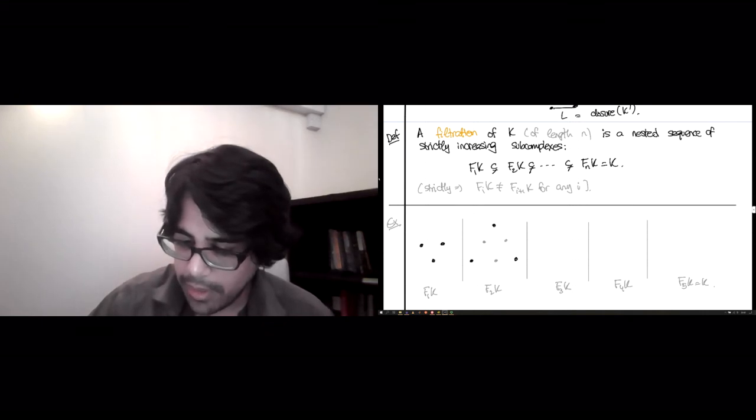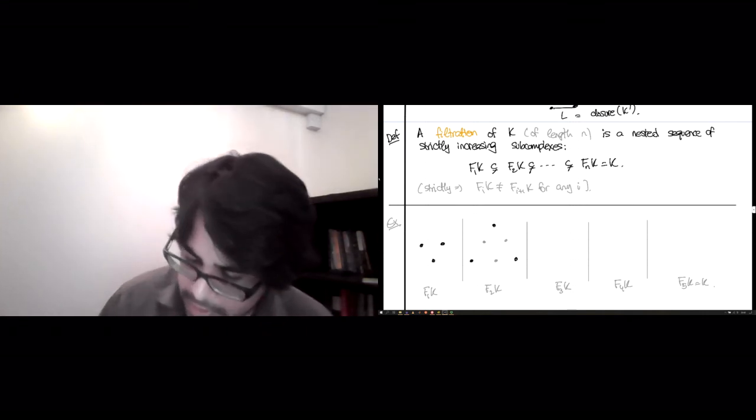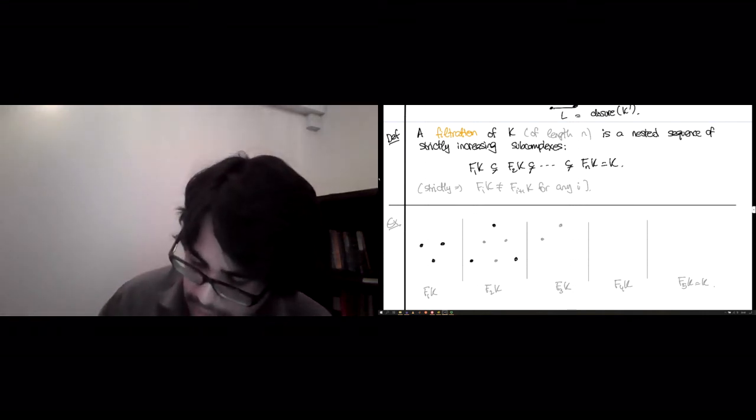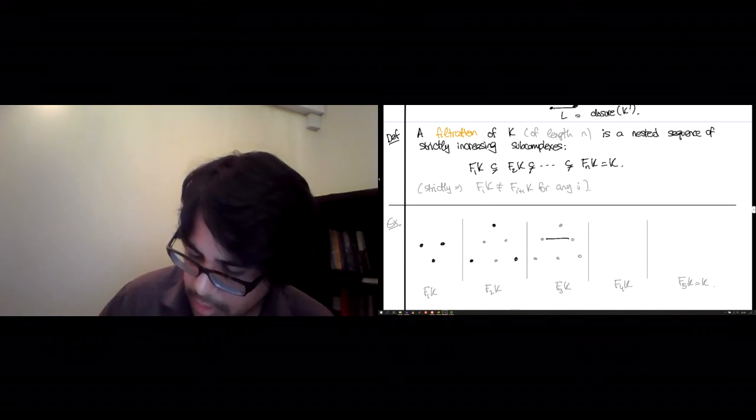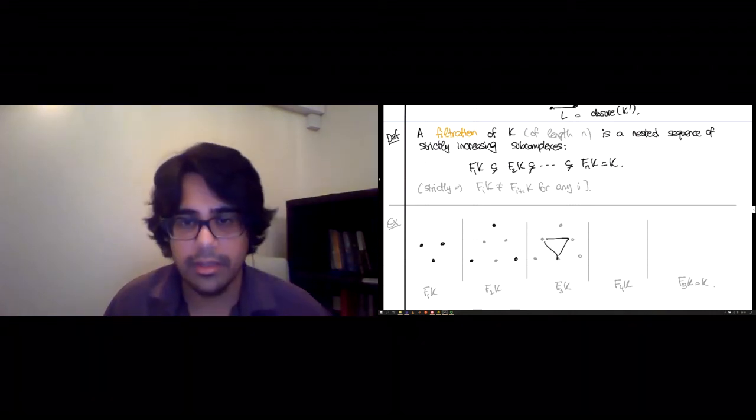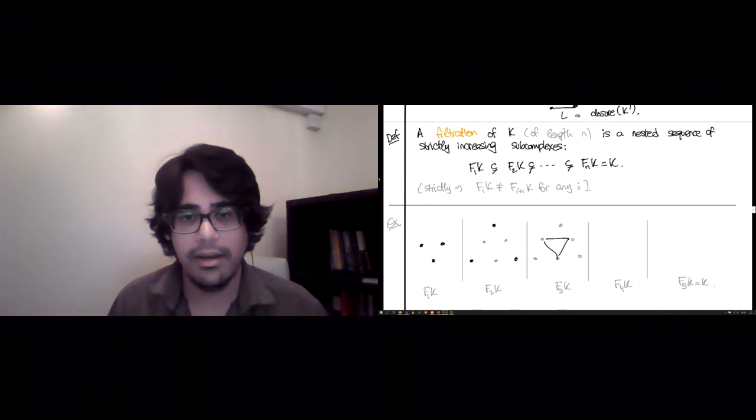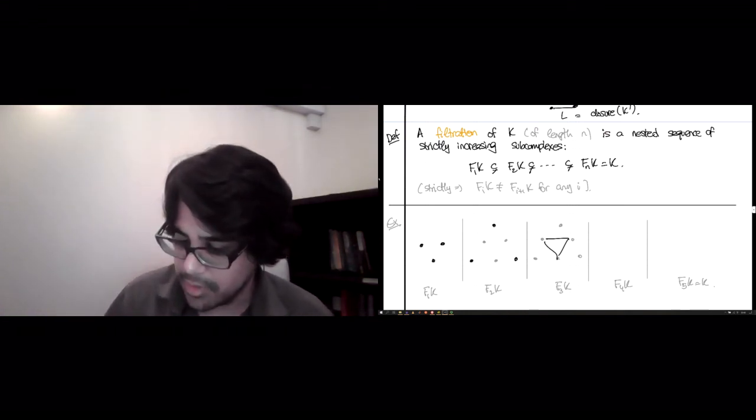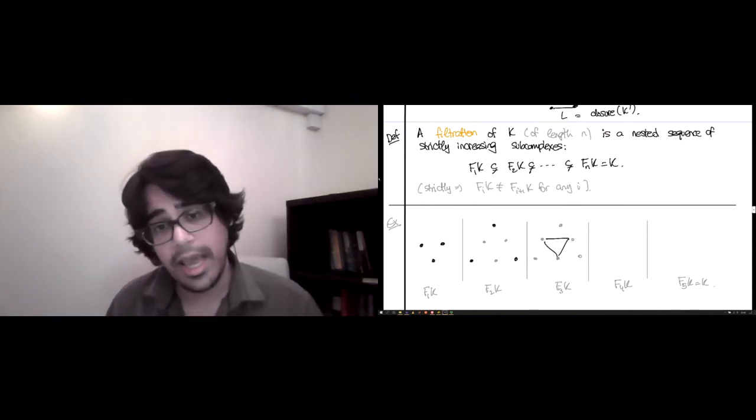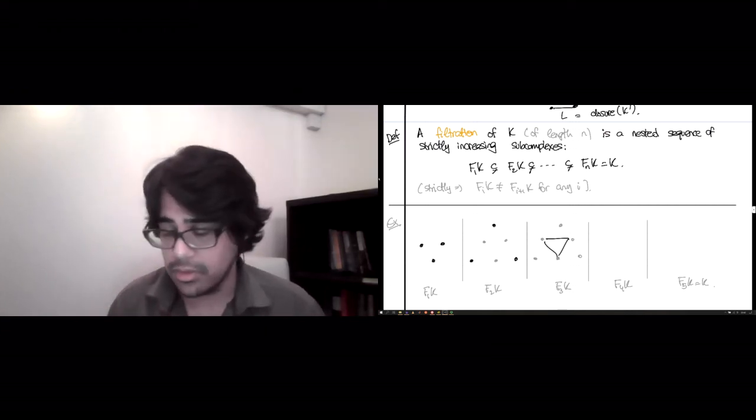Now in step three, we must contain at least these six vertices, and we could add more vertices if we wanted to, but let's add a few edges. Let's say this downward pointing triangle, so we added three edges, and again, is this a simplicial complex? Yes, it is. In fact, it's a graph, so it's a one-dimensional simplicial complex, and is it bigger than the thing to the left? Yes. So far we're good.